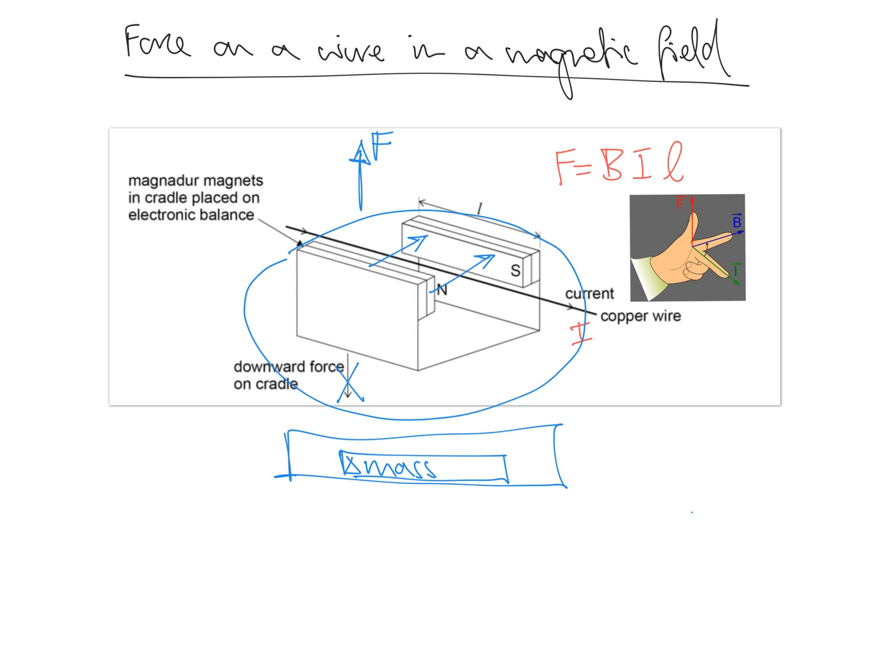So, now you know the idea of it, let's just talk about what we're changing and what we're going to measure. So, our independent variable, what we're changing is going to be the current. And what we're measuring is going to be the force.